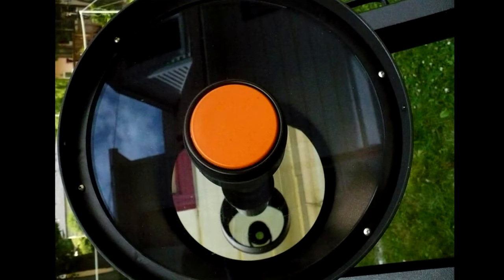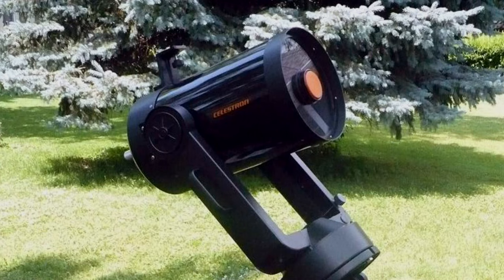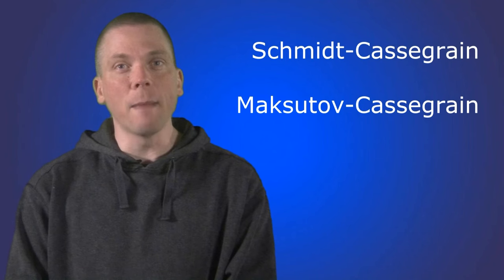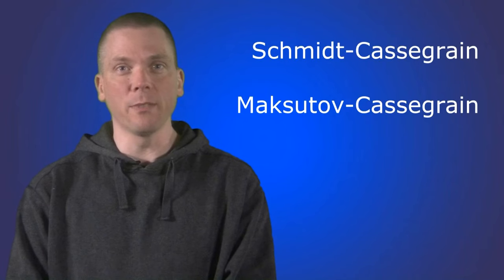It basically can take a very long focal length light path and fold it into a shorter tube. There are other versions of catadioptric scopes, Schmidt-Cassegrain's and Maksutov-Cassegrain's being the most prominent amateur types available.